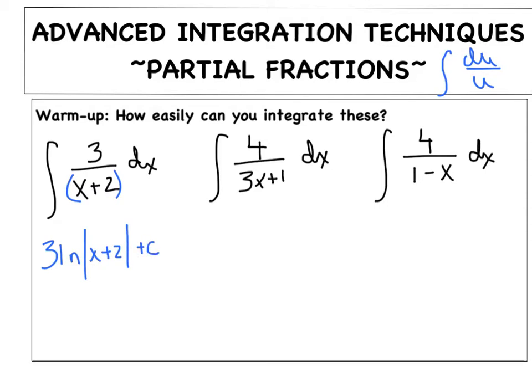The second one was a little trickier because of the extra coefficient. By the time I let u equal 3x plus 1, I had a coefficient of 4 thirds. And the third one is the most deceptive one because if we do let u equal 1 minus x, we're going to get a negative 4 as my coefficient. Natural log of the absolute value of 1 minus x plus c.